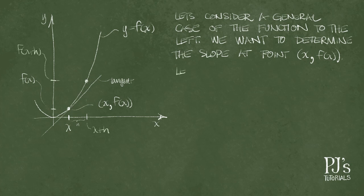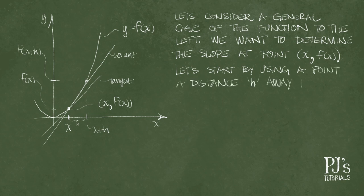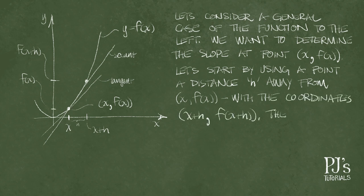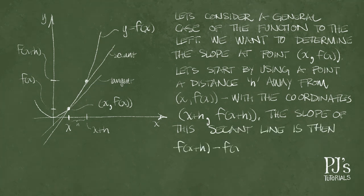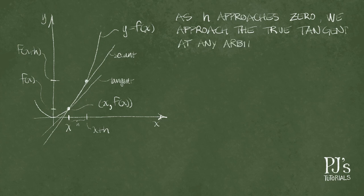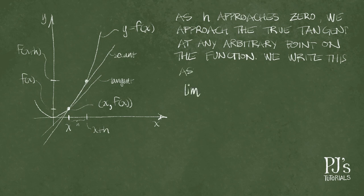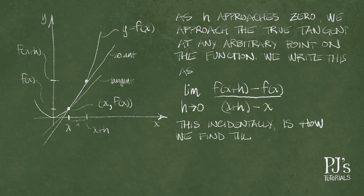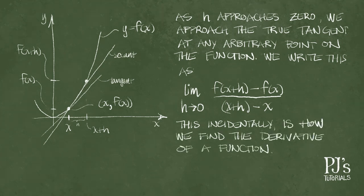So we can use the same strategy we employed before by taking another point x plus h or distance h away from x with the coordinates (x plus h, f of x plus h). The slope of this secant line then is f of x plus h minus f of x over x plus h minus x. As h approaches 0, we approach the true tangent at any arbitrary point on the function. We write this as the limit as h approaches 0 of f of x plus h minus f of x over x plus h minus x. This incidentally is how we find the derivative of a function.